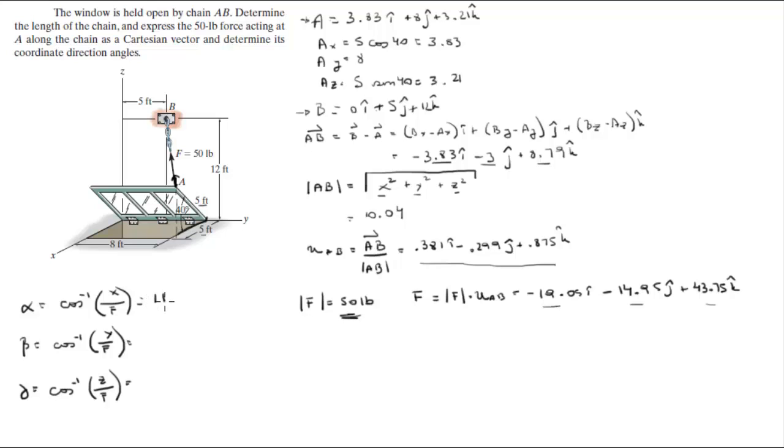So you get that alpha is equal to 112.4 degrees, beta is 107.4 degrees, and gamma is 28.96 degrees.